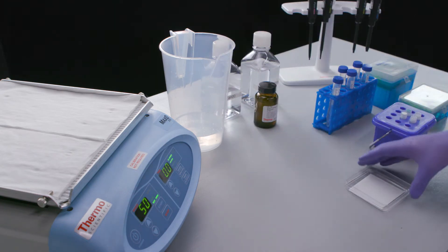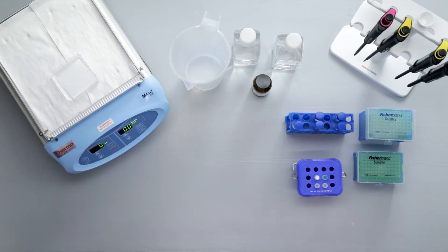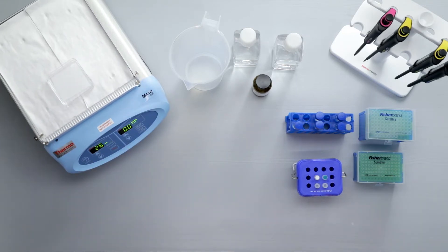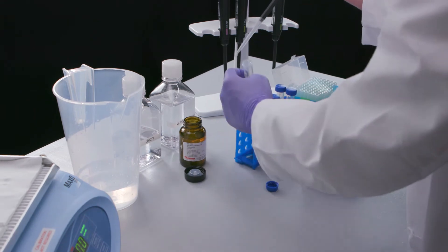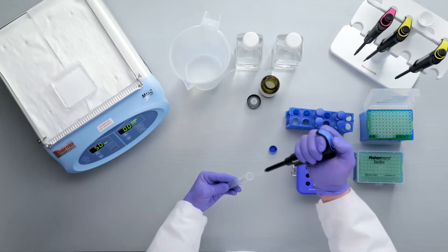After protein transfer, wash the membrane in deionized water with agitation to remove excess transfer buffer. Prepare the blocking buffer by diluting the Blocker FL fluorescent blocking buffer from 10x to 1x with deionized water.